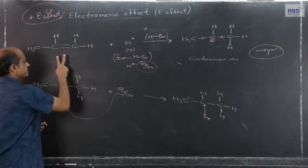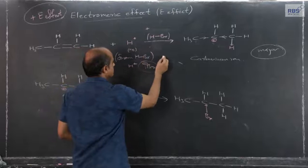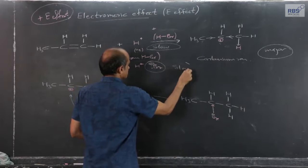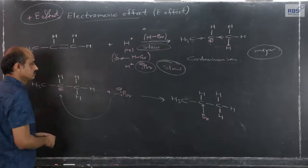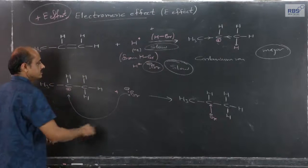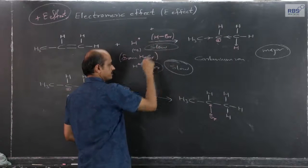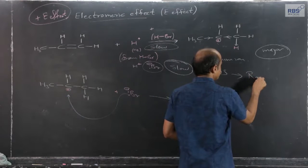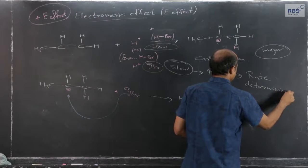Normally we write it directly as addition of HBr with the final product. The first step — addition of H+ — is a very important slow step compared to the second step. Therefore, the rate of the reaction is determined by the first step. The first step, addition of H+ giving rise to the carbonium ion, is the slow step and is called the RDS — rate-determining step — which determines the rate of the reaction.